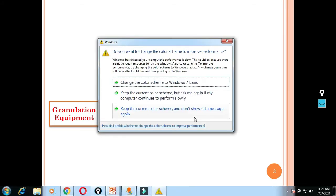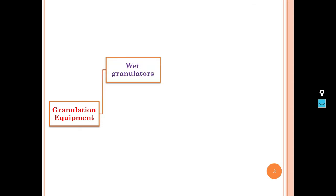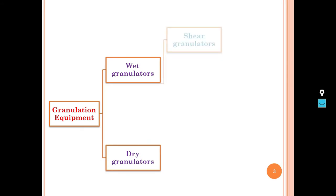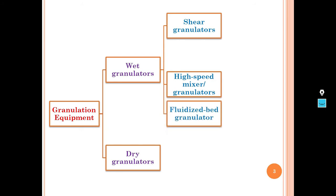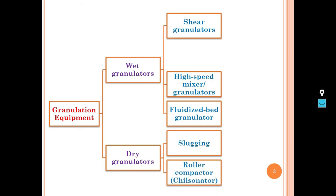Granulation equipment is of two main types: wet granulators and dry granulators. Wet granulators fall into three categories: shear granulators, high speed mixer granulators, and fluidized bed granulators. For dry granulators, we generally use slugging techniques and roller compactors, also called chilsonators.